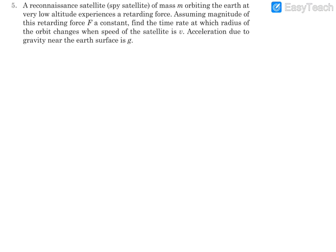Equation number five: a reconnaissance satellite used for spying purposes of mass m is orbiting the earth at very low altitude and experiences a retarding force. Assuming the magnitude of retarding force F is constant, we need to find the time rate at which the radius of the orbit changes when its speed is V, and acceleration due to gravity is g.